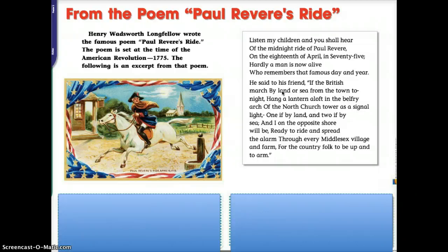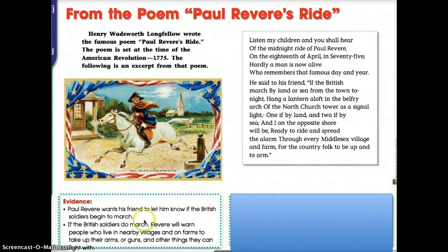Let's look closely to find clues that suggest whose side Revere is on. What does the author tell us about what signal Paul Revere will be waiting for? Pause the video, jot down a couple of answers, then restart and see how you did. Hopefully you wrote something like: Paul Revere wants his friend to let him know if the British soldiers begin to march. And if the British soldiers do march, Revere will warn people in nearby villages and on farms to take up their arms or guns and other things they can fight with.